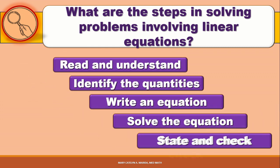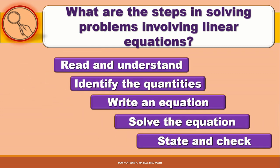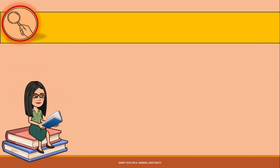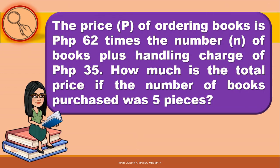Now let us solve problems following these steps with examples. Example number 1: the price P of ordering books is 62 pesos times the number N of books, plus a handling charge of 35 pesos. How much is the total price if the number of books purchased was 5 pieces?